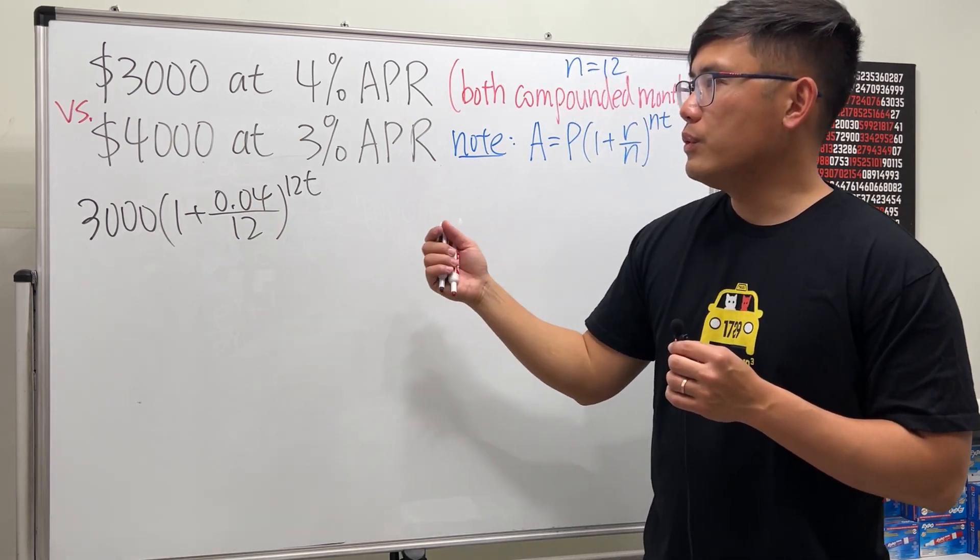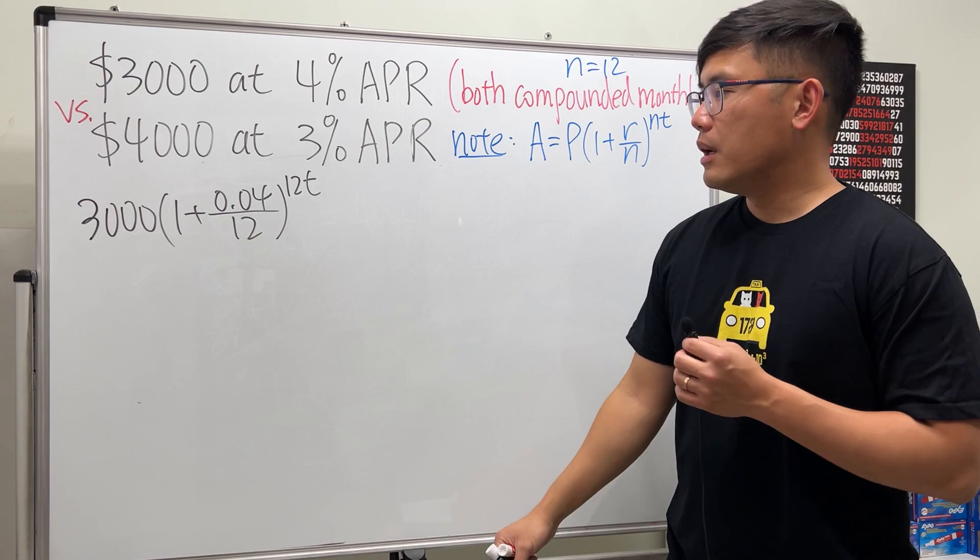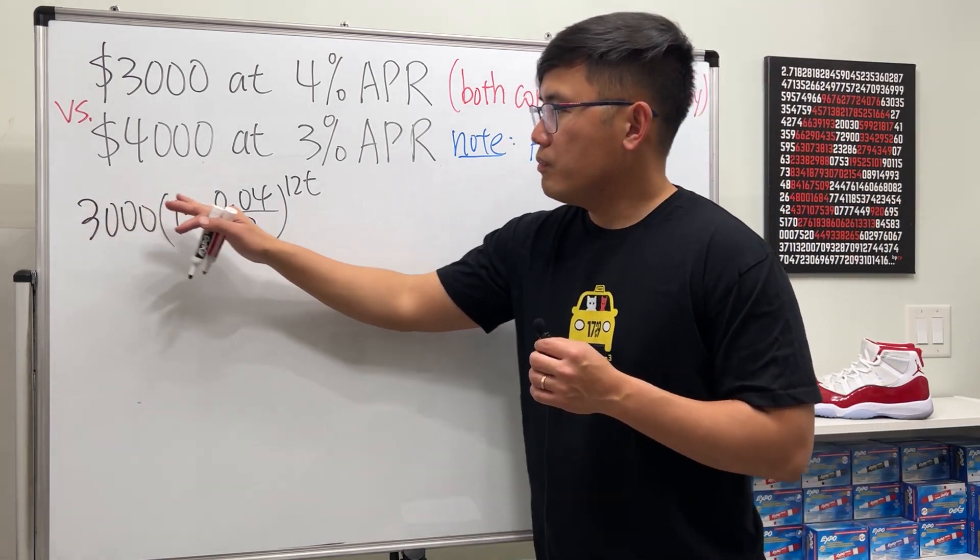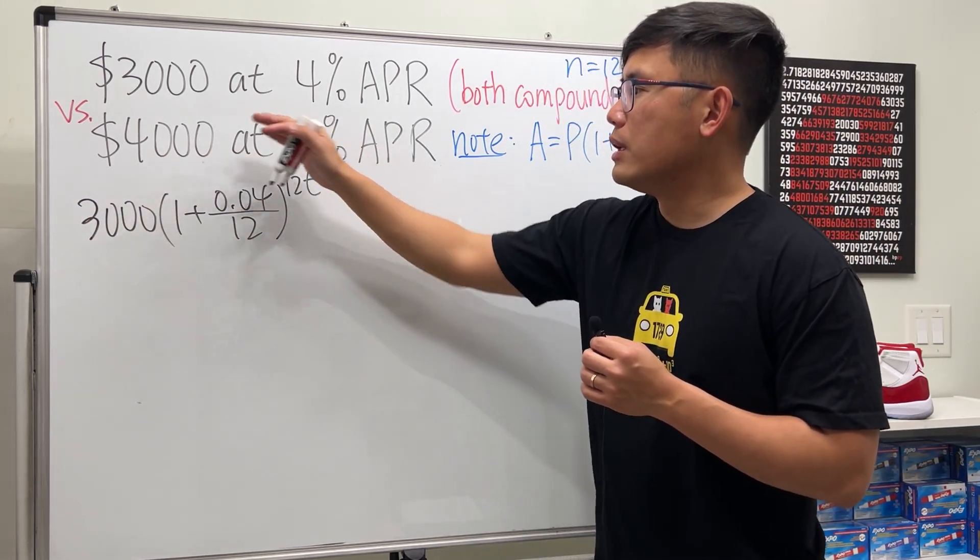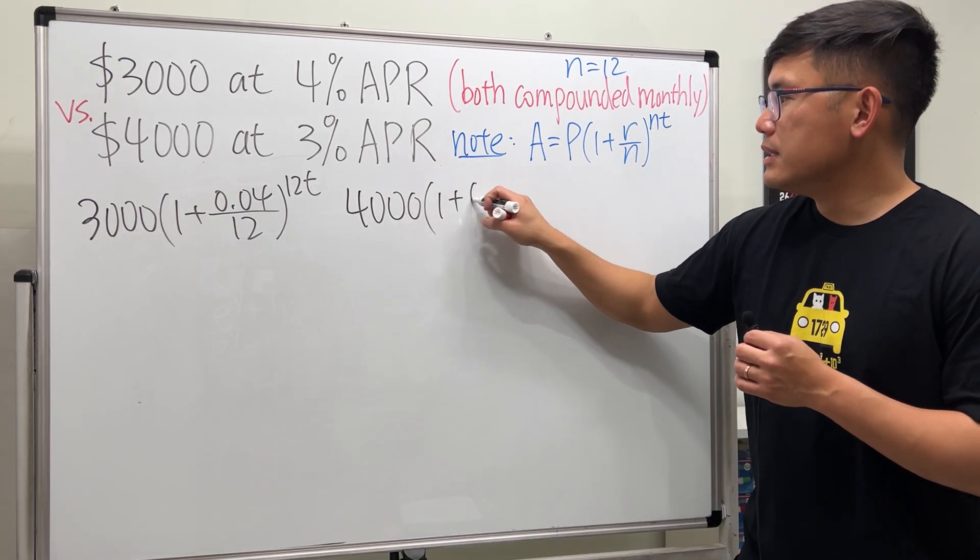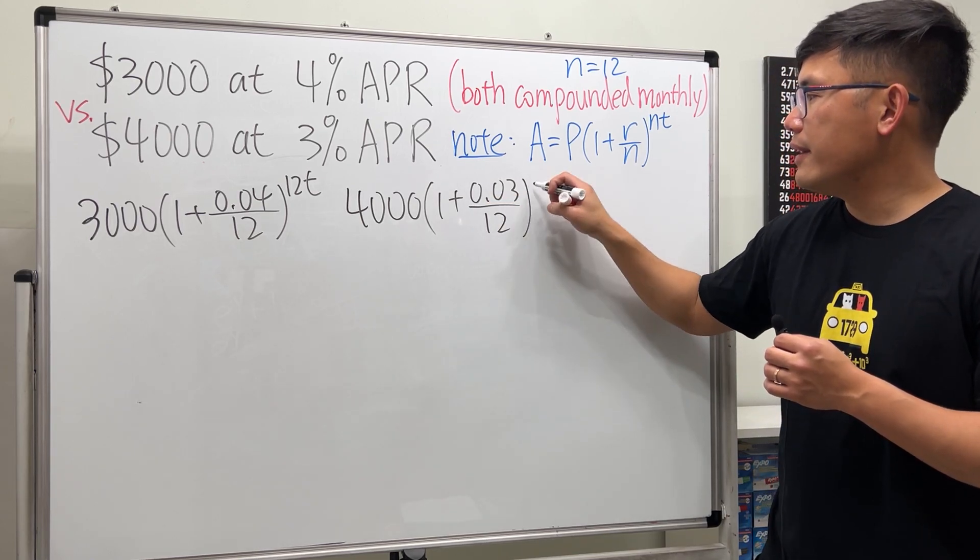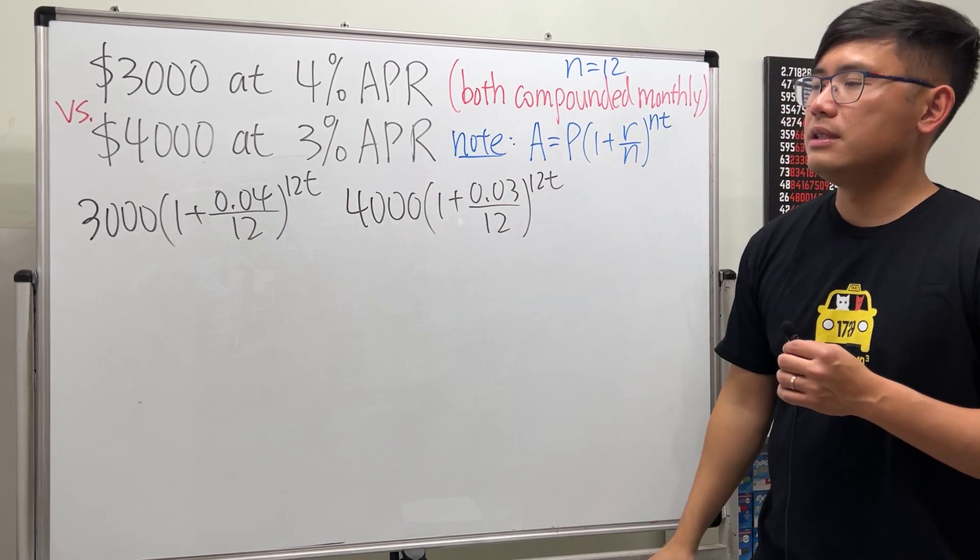Let's do the same thing for the second one. We will have $4,000 for the principal times (1 + 0.03/12), and then also raise that to the 12t power.